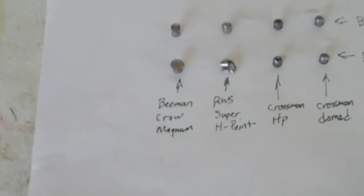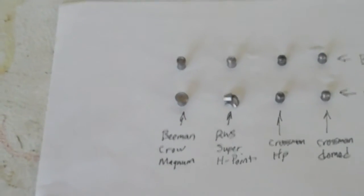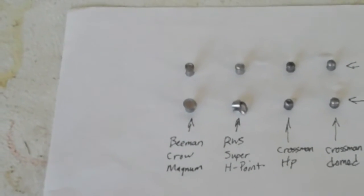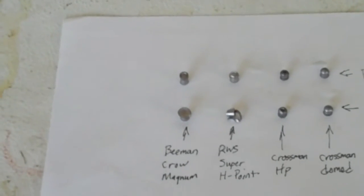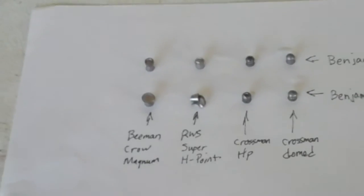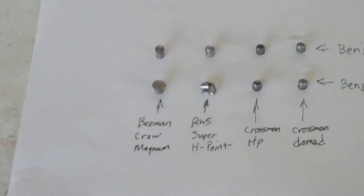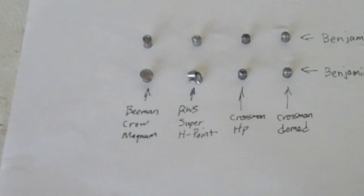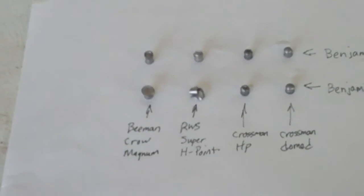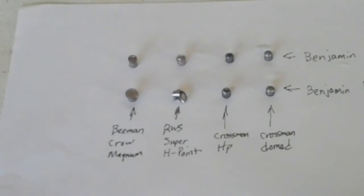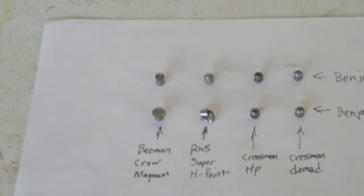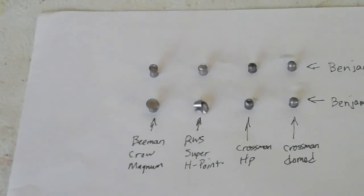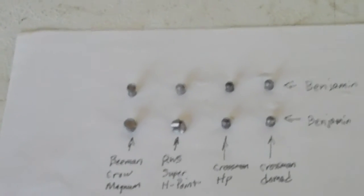The RWS Super H point actually broke into two pieces out of the Benjamin Discovery. This would probably be my pellet of choice in the Benjamin 922.